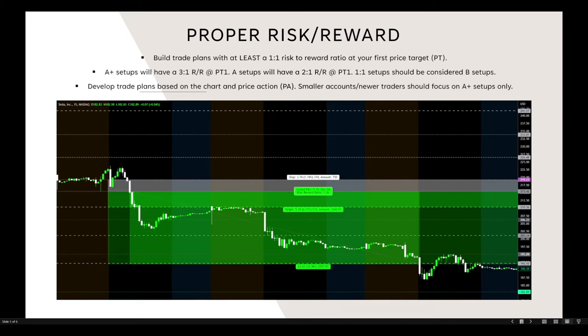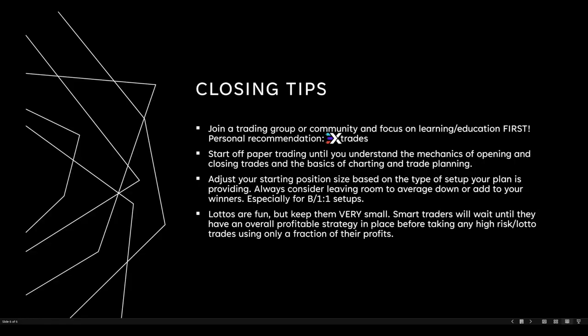Trade plans typically have more than one price target. In this Tesla example, the overall risk-to-reward hitting PT3 without stopping out was 6.39-to-1. That said, always judge your setups based on the PT1 distance versus stop-loss distance from entry. Following all these guidelines should put you in a position to trade sustainably long enough to learn and develop a profitable system.